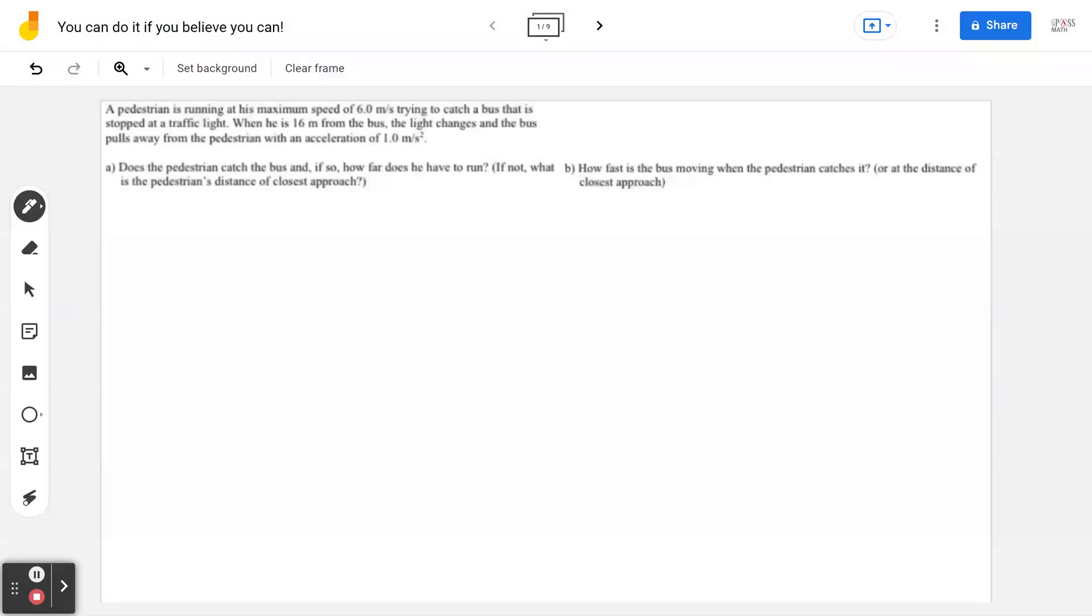Hi everyone, let's take a look at the following physics kinematics example. A pedestrian is running at its maximum speed of 6 meters per second trying to catch a bus that is stopped at a traffic light. When he is 16 meters from the bus, the light changes and the bus pulls away from the pedestrian with acceleration of 1 meter per second square.